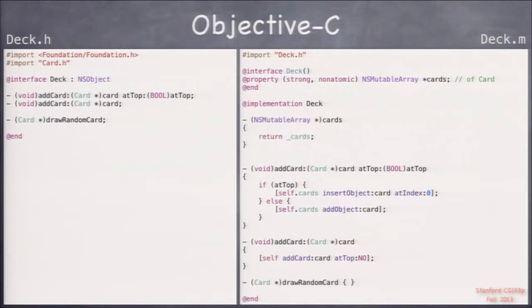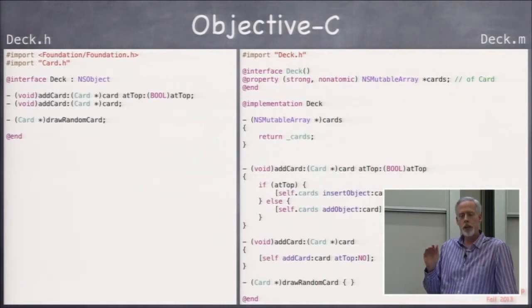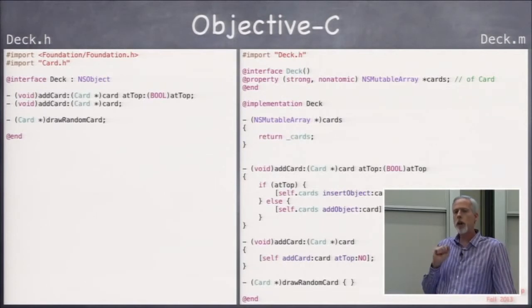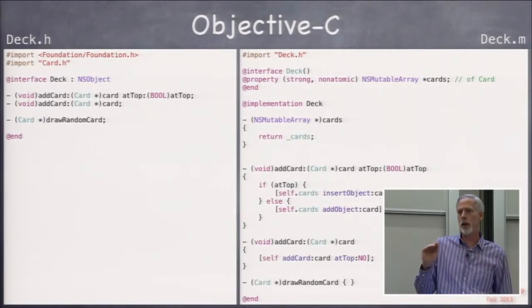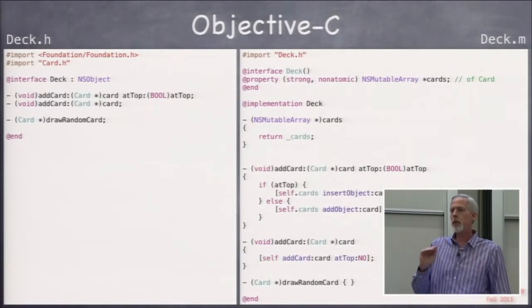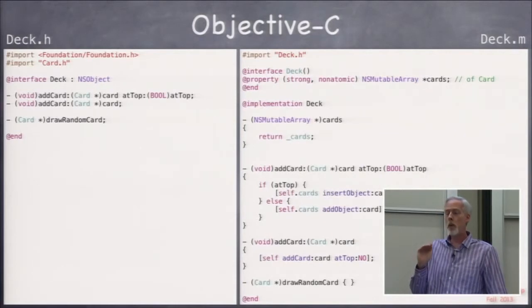There's a problem, though. In addCards, if we just created a deck and then called addCard, it would not work. It would do nothing. Why? Because the property cards, self.cards, its getter by default just returns the underbar cards instance variable. That underbar cards instance variable is going to start out as zero, because all instance variables in an Objective-C object start out zero, including pointers. That pointer will be zero, which we call nil, which means it doesn't point to anything, which means there is no array.